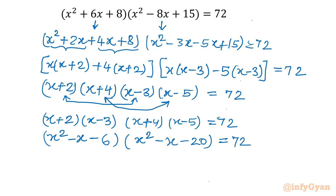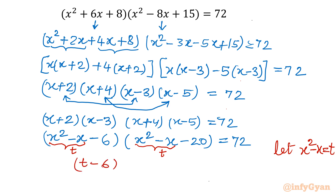Now it is clearly visible that if I substitute x² - x equal to t, both brackets share the same core expression. Let x² - x = t. Then the equation becomes (t - 6)(t - 20) = 72. We now need to solve this quadratic equation in t, where our substitution is x² - x = t.